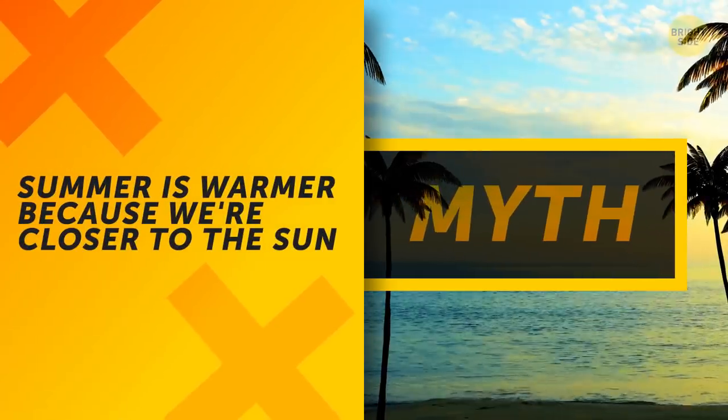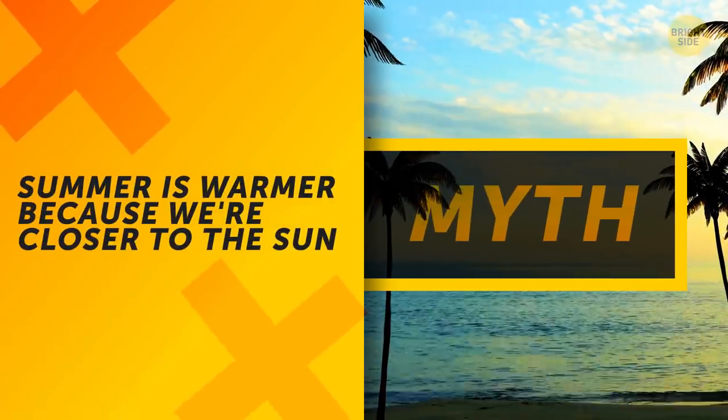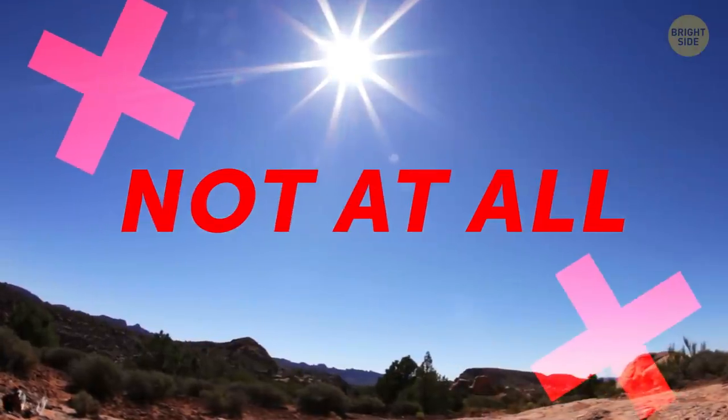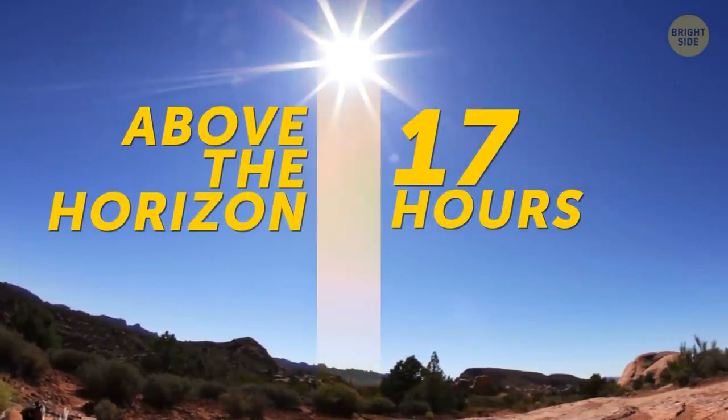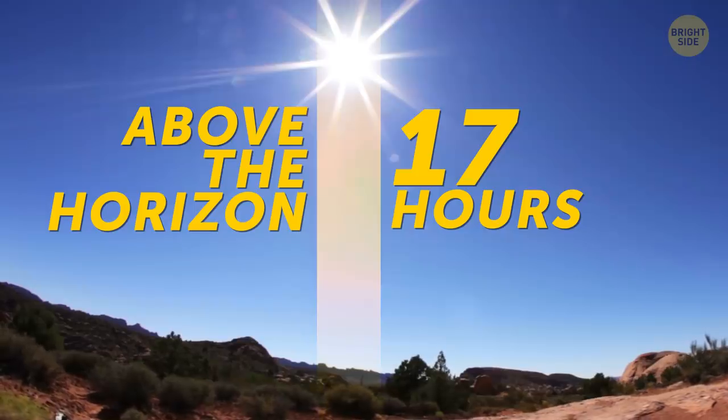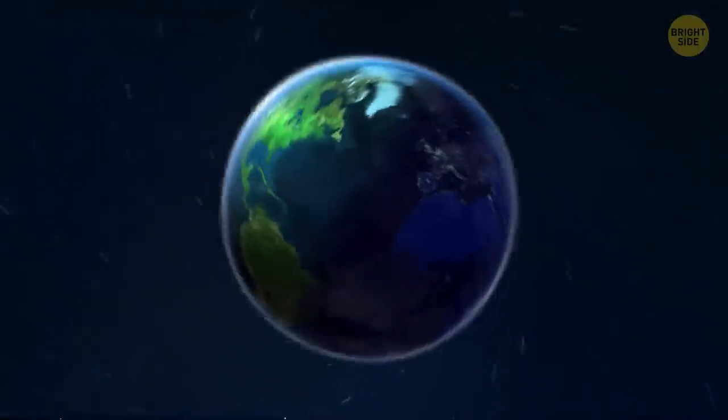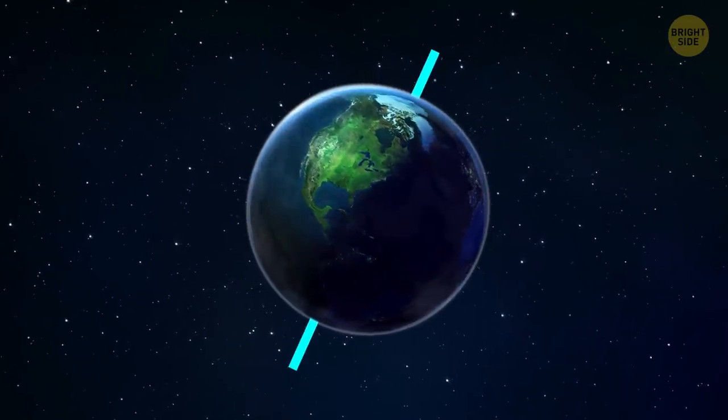Summer is warmer because we're closer to the Sun. Nope, not at all. During summer, the Sun is above the horizon for up to 17 hours a day. But during the winter, it's just 6 hours. This happens because the axis of the Earth is tilted at an angle.